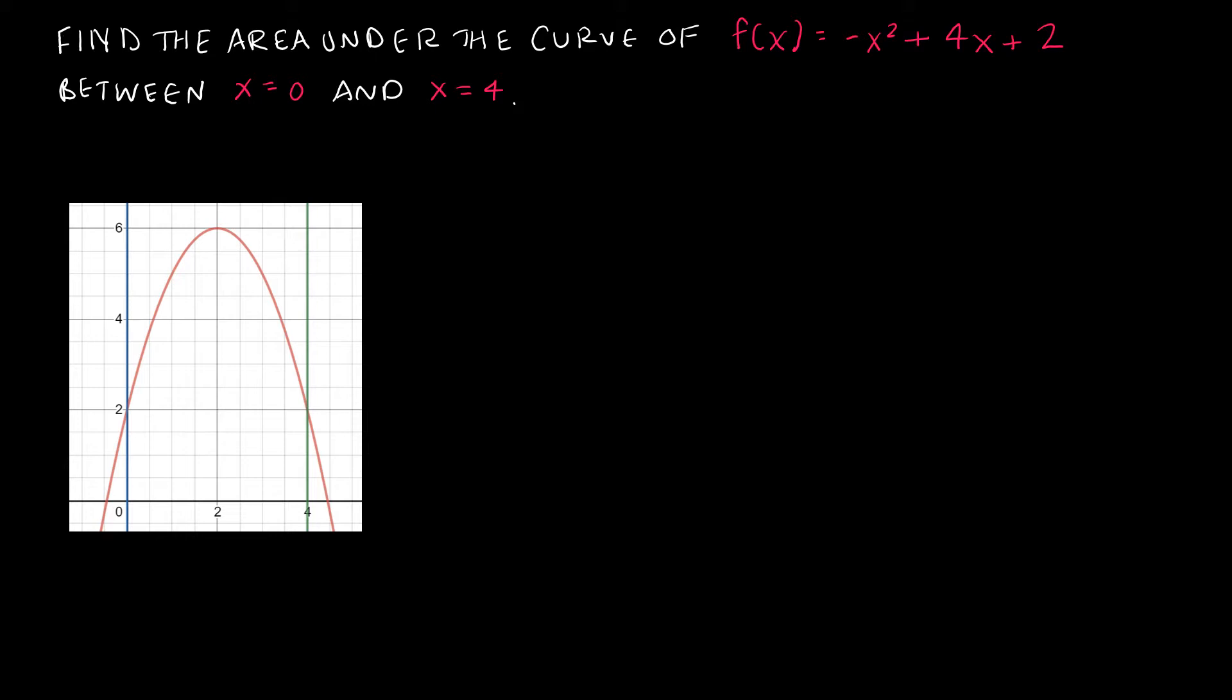As you can see I've used Desmos to graph both f(x) = -x² + 4x + 2, which is the parabola, the red line on the graph, and then I've also graphed x = 0 and x = 4, which are the blue and green lines.